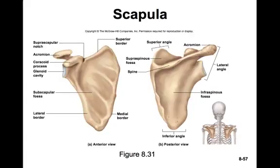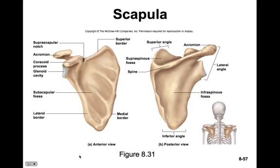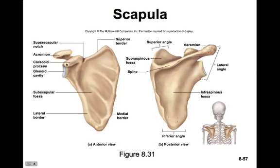The scapula has three sides, three angles, and three fossae. The lateral angle of the scapula has three main features: the acromion, the coracoid process, and the glenoid cavity. The acromion comes over the top of the shoulder joint and holds everything in place. It articulates with the clavicle and is the sole point of attachment of the scapula and the upper limb to the rest of the skeleton. The coracoid process is shaped like a little hook and acts as the attachment site for tendons of the biceps and other arm muscles.